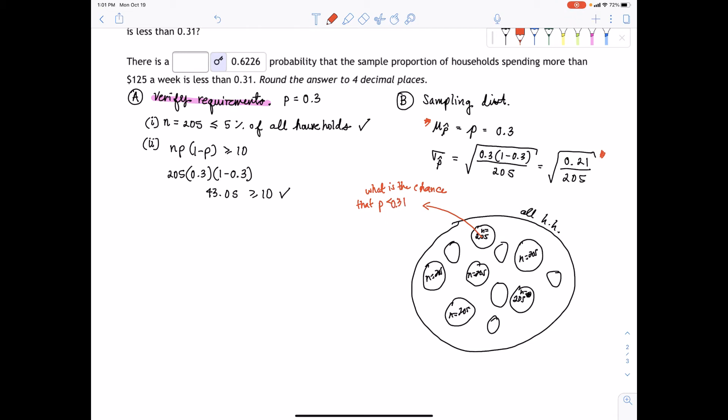So what is the chance or the probability that this randomly selected sample from all these households and all these samples - notice we're randomly selecting a sample. What is the chance that if we randomly select one of these samples of 205, that that proportion would be less than 31% of households spending $125 a week in groceries. So that's really what we're looking for.